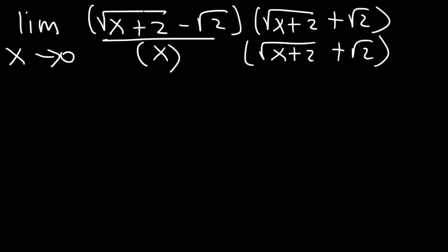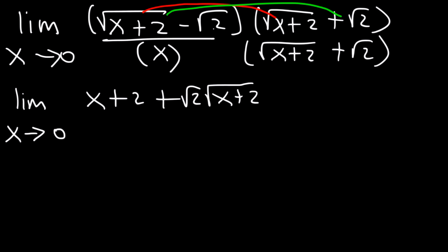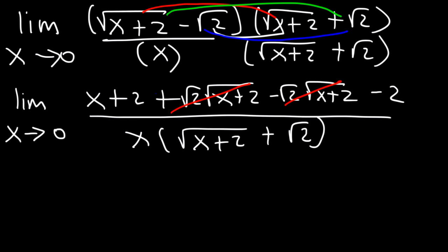On top, let's FOIL. The square root of x plus 2 times the square root of x plus 2 simply equals x plus 2. Then multiplying the outer and inner terms gives square root 2 times square root of x plus 2, and we can see those middle terms cancel. Finally, negative square root 2 times positive square root 2 is negative square root of 4, which is negative 2. Now, positive 2 and negative 2 add up to 0.